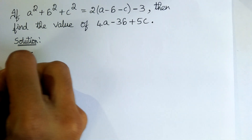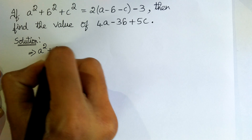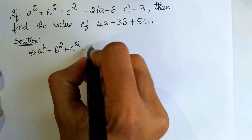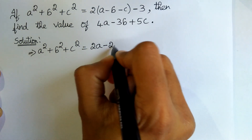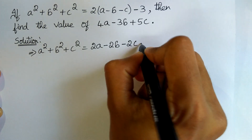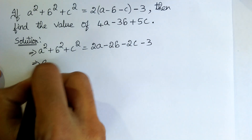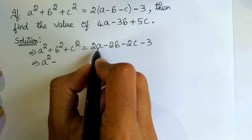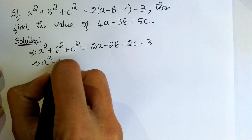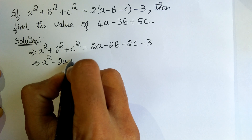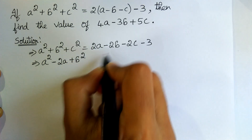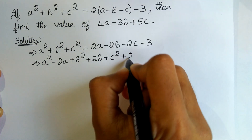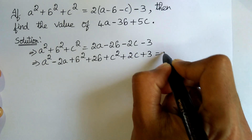a² + b² + c² = 2(a - b - c) - 3, that is 2a - 2b - 2c - 3. Taking 2a to the left-hand side: a² - 2a + b² + 2b + c² + 2c + 3 = 0.